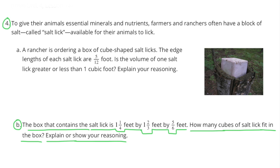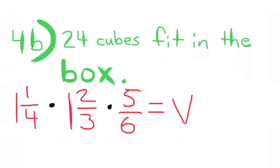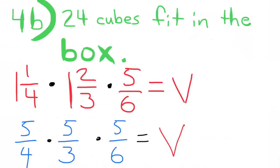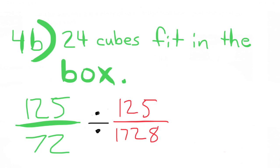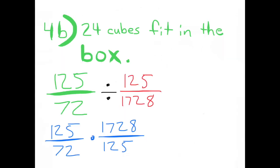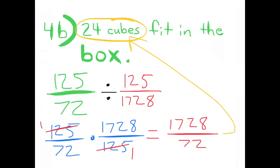Part b: The box containing the salt licks measures one and one-fourth feet by one and two-thirds feet by five-sixths feet. The volume is five-fourths times five-thirds times five-sixths, which equals 125 over 72. Dividing 125 over 72 by the volume of each cube (125 over 1,728) by multiplying by the reciprocal gives 24 cubes. Twenty-four cubes fit in the box.